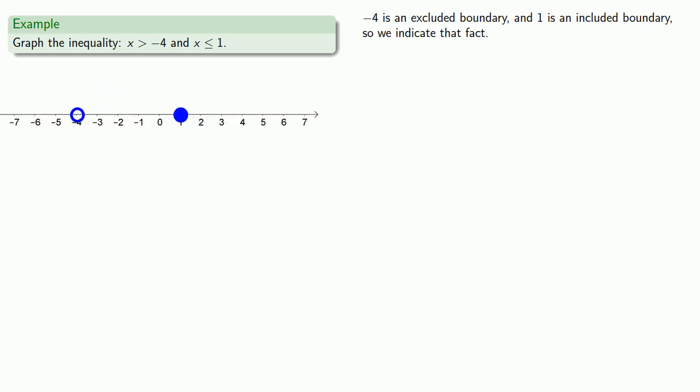Now, notice that our boundaries have separated the number line into 3 parts. Also remember that our inequality requires that x be greater than negative 4 AND also x has to be less than or equal to 1. So this means we need to shade only those portions where both of these statements are true.